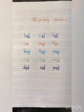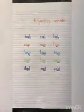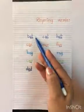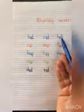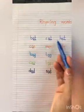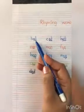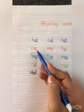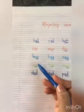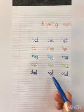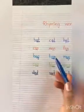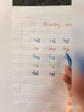Rhyming words means in a set of given words, the last two letters should be the same. You can see in all of the given words, the last two letters in each set are the same.